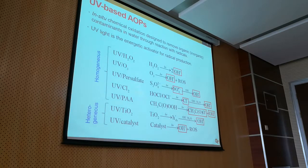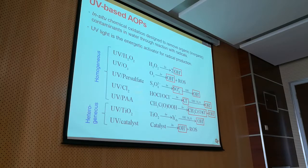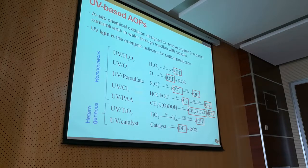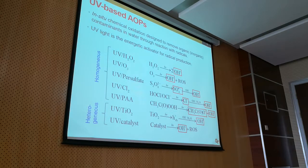I'm going to focus on UV-based AOP because that's where we have most of the experience and have done most of the research. UV-based AOP means that UV light is the activator — it provides the energy for radical production. There are many different types of UV-based AOP.